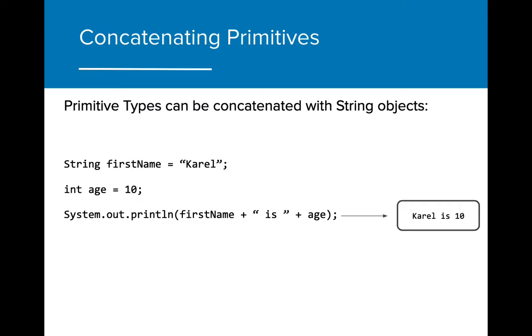We can also concatenate primitive values with string objects. When a primitive value is concatenated with a string object, the program automatically converts the primitive value to a string object so that it can be used in the program. This is called implicit conversion.